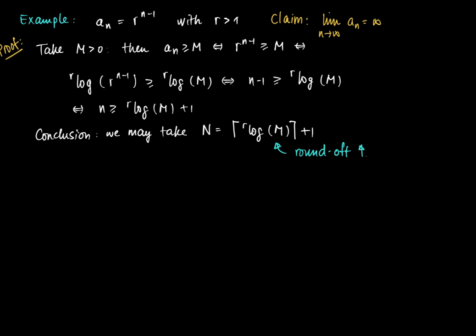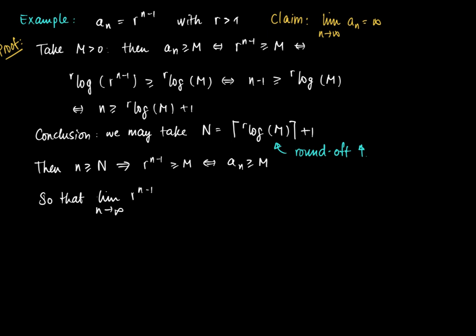We may conclude that for n at least equal to this capital N, it follows that r^(n−1) ≥ m, in which case we've shown that a_n is at least the value m. This is an exact proof of the statement that the limit as n goes to infinity of r^(n−1) equals infinity. So we conclude: the limit as n goes to infinity of r^(n−1) equals infinity.